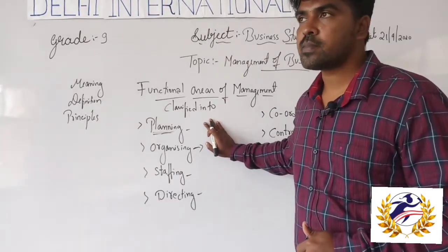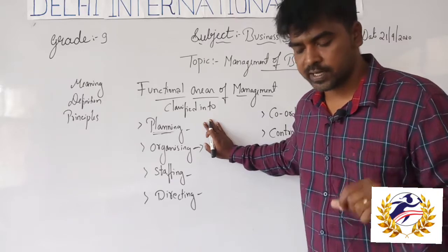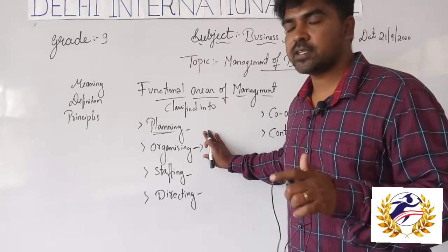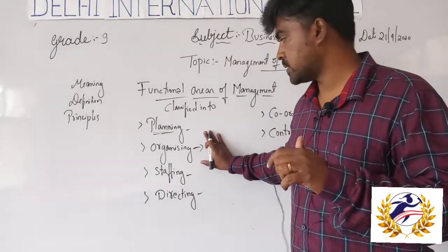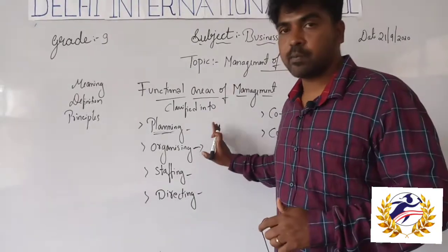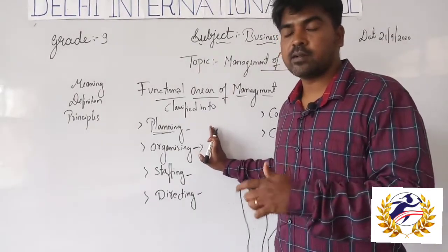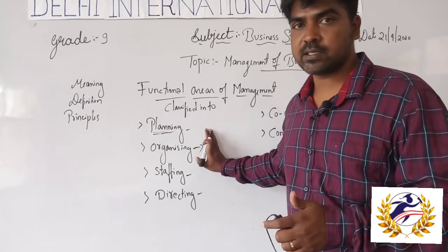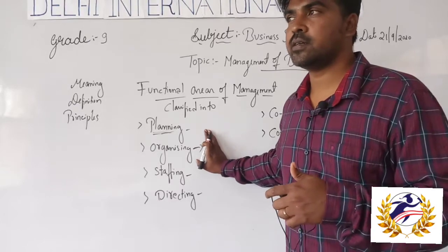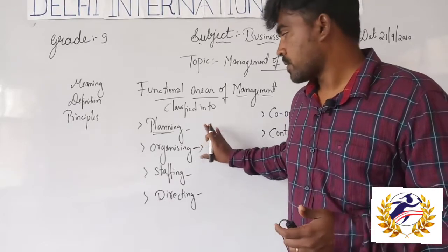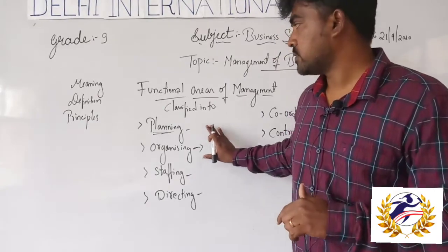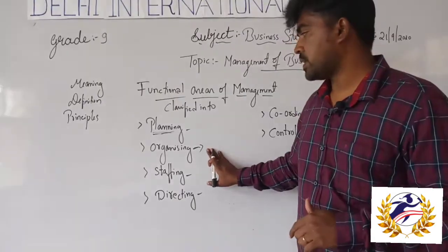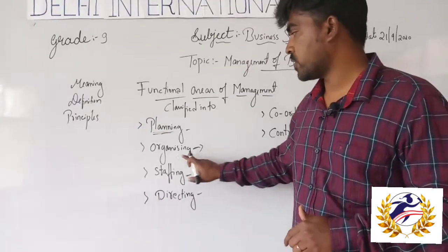Next is organizing. Taking industry as an example — in an industry, the management committee or management department has to provide manpower, raw materials, and machine technologies. They should organize each and everything to function smoothly. This is one of the important functional areas: organizing.